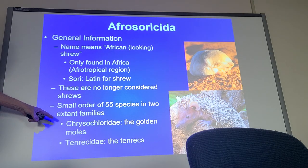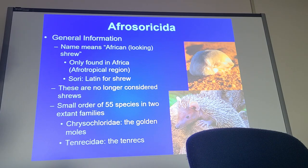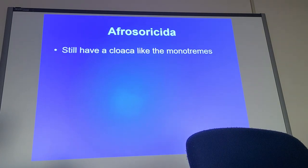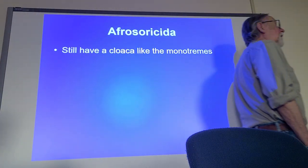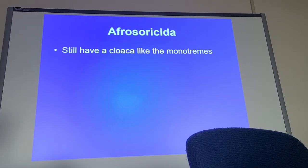One family is Chrysochloridae — the golden moles — and the other is Tenrecidae — the tenrecs. These are really, really primitive. They're not that much different from monotremes in some ways. They don't produce eggs, but they still have a cloaca.